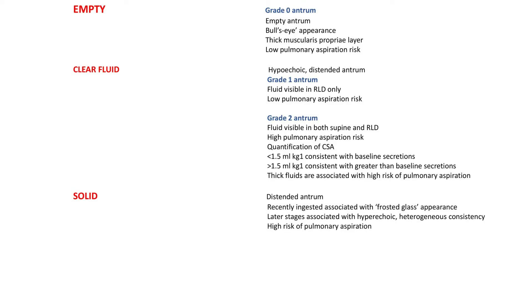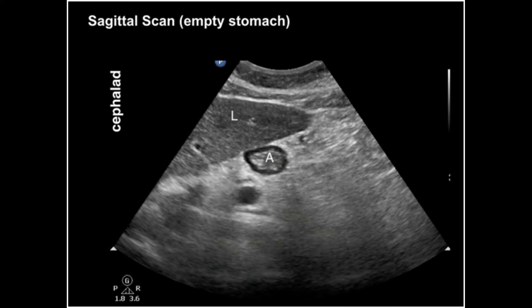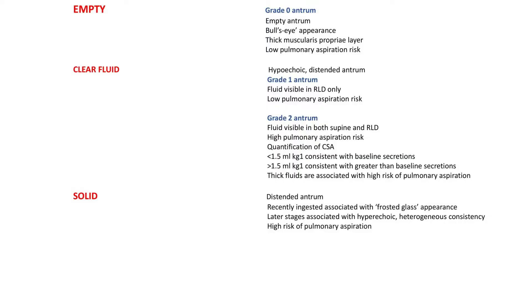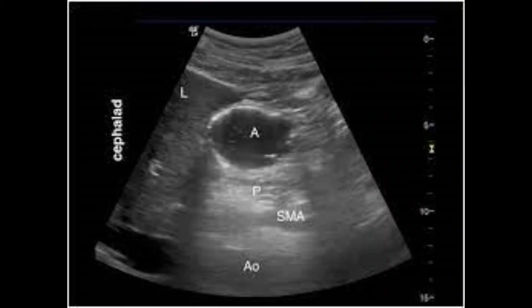Once the image is obtained, the aim is to quantify the contents of the gastric antrum. The antrum may be empty, contain variable volumes of fluid, or contain solids. When the stomach is empty, it appears small, flat, and collapsed in both supine and right lateral decubitus positions — described as a 'bull's eye' appearance — and carries a low risk of pulmonary aspiration. Gastric secretions and clear fluids such as water or black tea appear anechoic or hypoechoic, while thick fluids such as milk or juice with pulp are more echoic and homogeneous. Clear fluids with air bubbles can give a 'starry night' appearance.